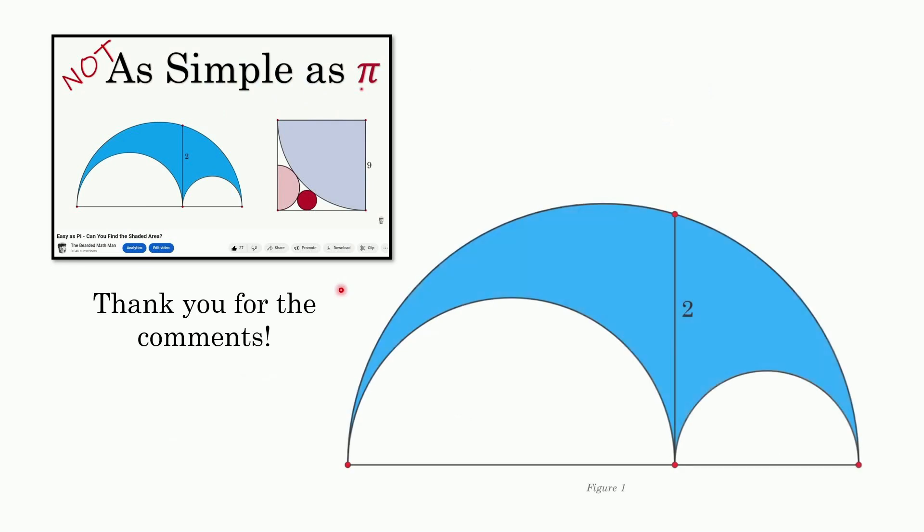This is based off of last week's question. Tons of comments. I really love hearing from you guys and talking to you guys, especially when there's a unique way to solve something. In last week's question, we had this big semicircle with two smaller inscribed semicircles. And this tangent line that was tangent to the two semicircles, the smaller ones, was equal to two.